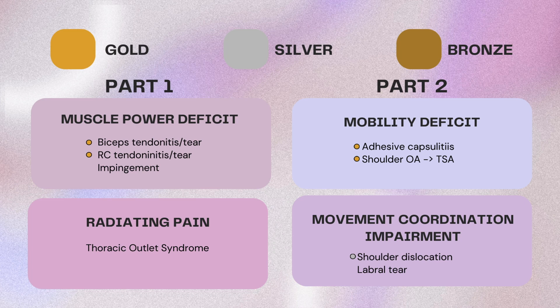In part one we'll go over muscle power deficit and radiating pain. Looking at how we break it down, we have gold, silver, and bronze topics. Score Builders breaks down topics based on what they call gold, silver, and bronze. Gold is what is highly seen on boards, silver a little bit less than that, and bronze a little bit less than that. For things like thoracic outlet and labral tear, those are not really grouped as bronze — lower than bronze — but we felt we should include and talk about them.